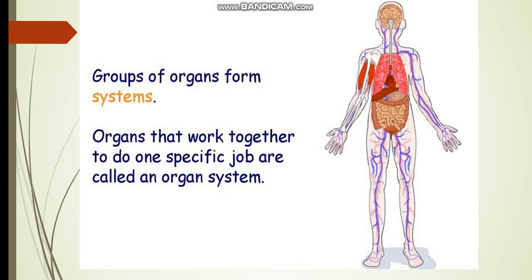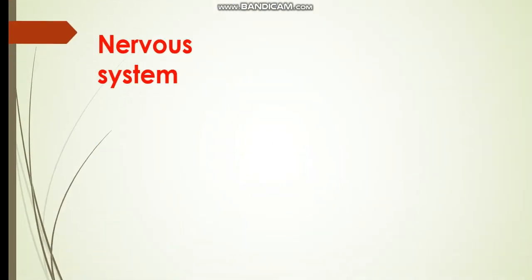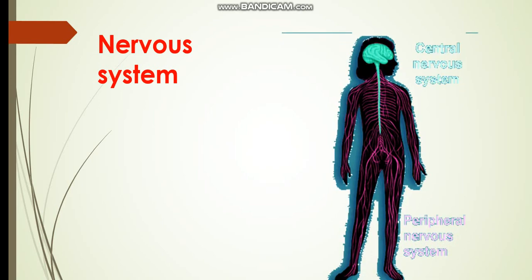Groups of organs form systems. Organs that work together to do one specific job are called an organ system. This is the nervous system.